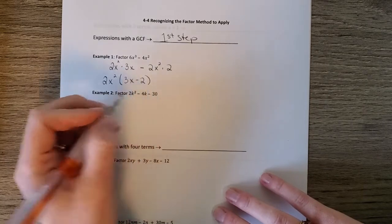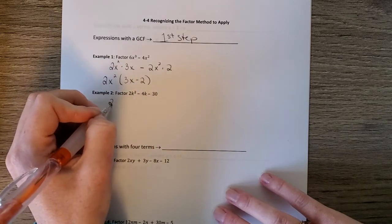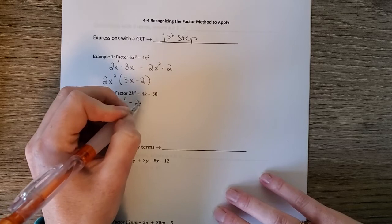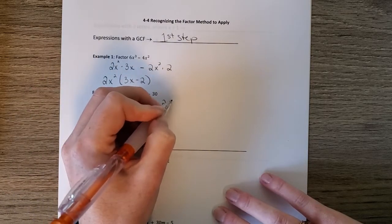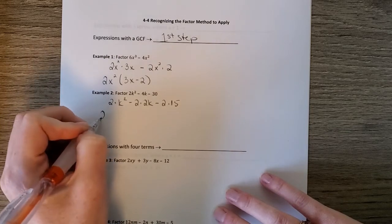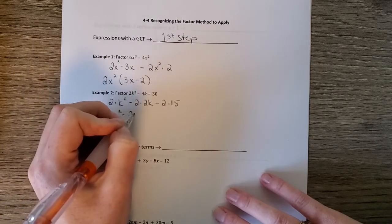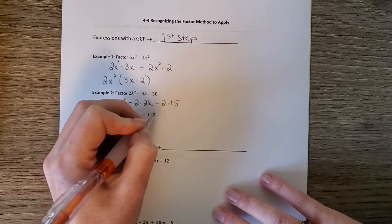In example 2, there's a GCF of 2. So 2 times k squared minus 2 times 2k minus 2 times 15. If we factor out the 2, we get k squared minus 2k minus 15.